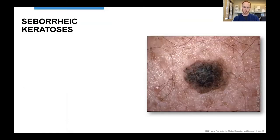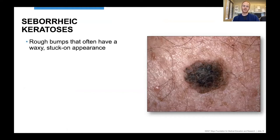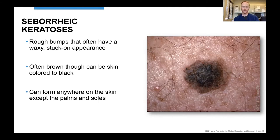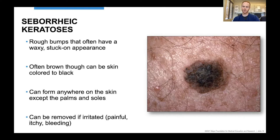Seborrheic keratoses are probably the most common skin growth that dermatologists see on a daily basis — we look at hundreds of these a day. They appear as rough bumps with a waxy or stuck-on appearance, almost like you could just scrape them off. They can be different colors — often brown, but can be skin-colored, pink, white, or dark black. They form on any part of the skin except the palms and soles. If they're irritated, painful, itchy, get caught on clothing, or bleed, they can be removed using liquid nitrogen cryotherapy or by applying heat or scraping.